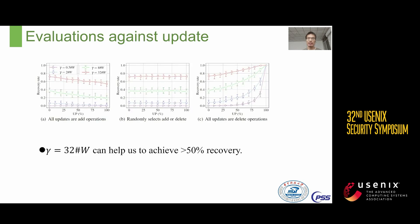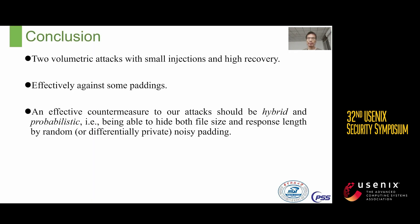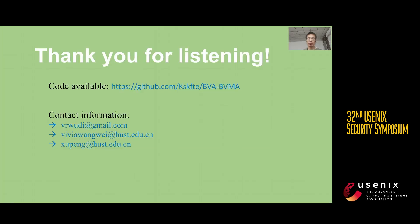We demonstrate the recovery rates on the Enron dataset under different gamma values and update strategies. We consider that client updates may be all additions, all deletions, or randomly selected additions and deletions. But no matter how the client updates files, setting gamma to 32×|W| is sufficient to achieve a recovery rate of over 50%. In conclusion, our volumetric attacks achieve high recovery rates with small injection cost and effectively bypass padding schemes. We argue that an effective countermeasure should be hybrid and probabilistic — hiding both file size and response length through random or differentially private noisy padding. Our code is available on GitHub.